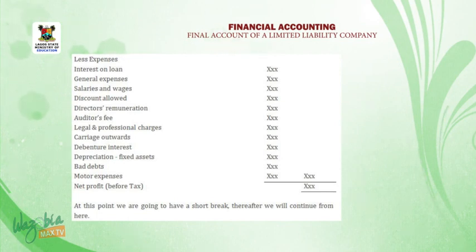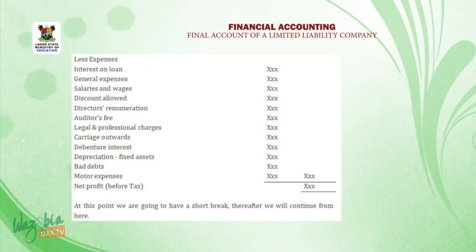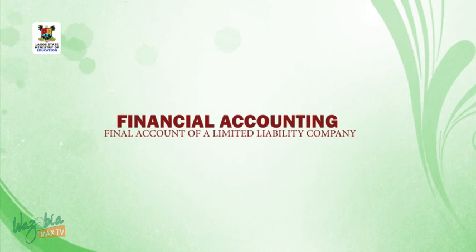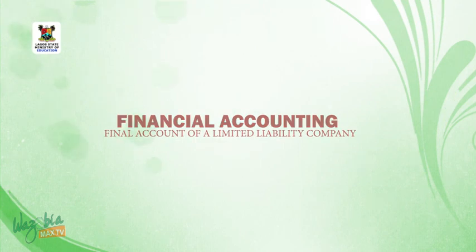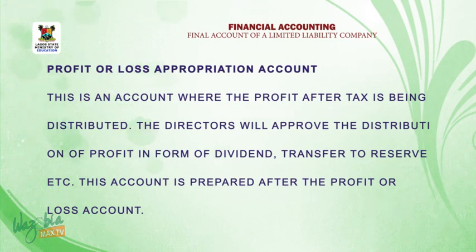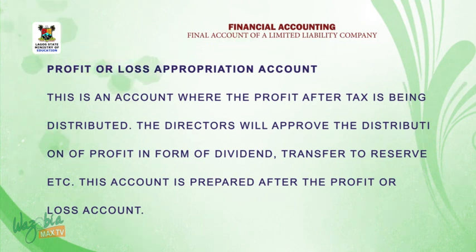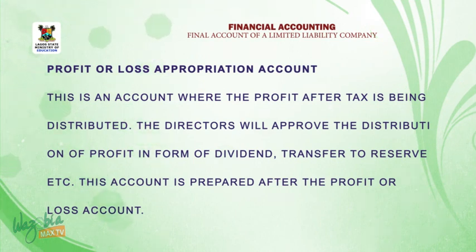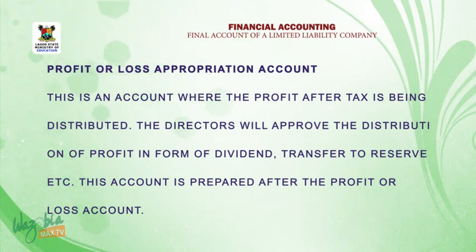All operating expenses are added together and deducted from the sub-total, so the difference gives us our net profit before tax. At this point we are going to have a short break, and thereafter we continue. Welcome back. On this segment, we are going to learn the profit or loss appropriation account of a limited liability company. The profit or loss appropriation account is where the profit after tax is being distributed.